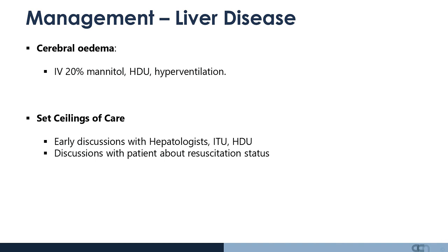It's a complicated condition and ceilings of care need to be set. Early discussions with hepatologists and intensivists should take place to determine which patients would benefit from aggressive management in intensive care and high dependency care. Discussions with the patient should take place early, while they are compos mentis, to discuss resuscitation. In this masterclass, we discussed liver transplantation, clinical presentation, chronic liver disease and its management, the various prognostication criteria, the King's College criteria, how to manage patients with liver disease, the complications, and the importance of setting ceilings of care.